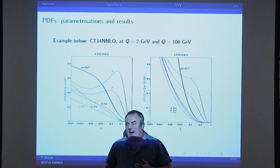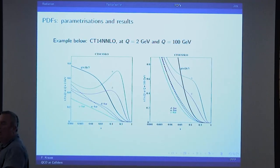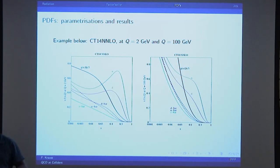Now, in the final state something similar happens. Let's assume you produce two quarks, or a quark-gluon pair or so. Of course they are like accelerated charges, they will radiate again. And the pattern of radiation is exactly the same: dω over ω, dk perp over k perp.